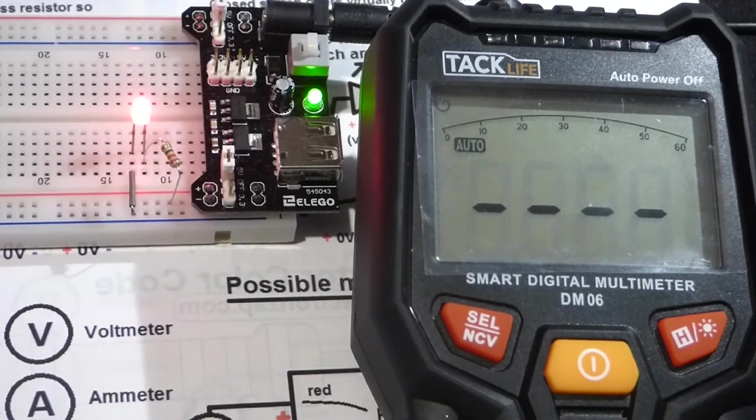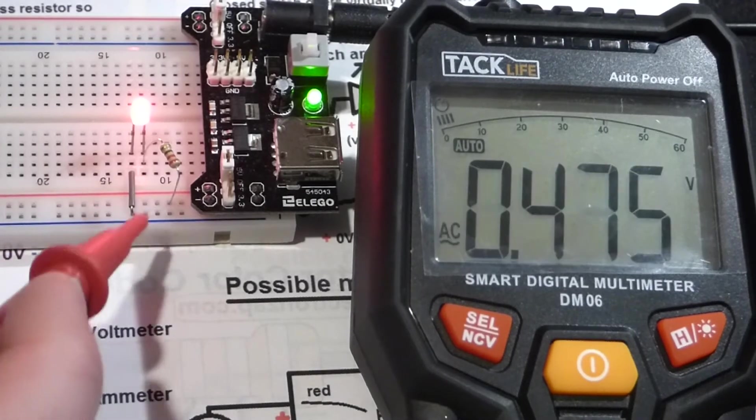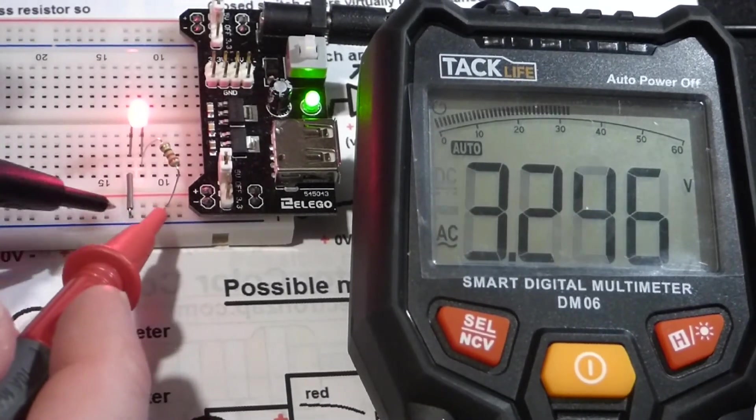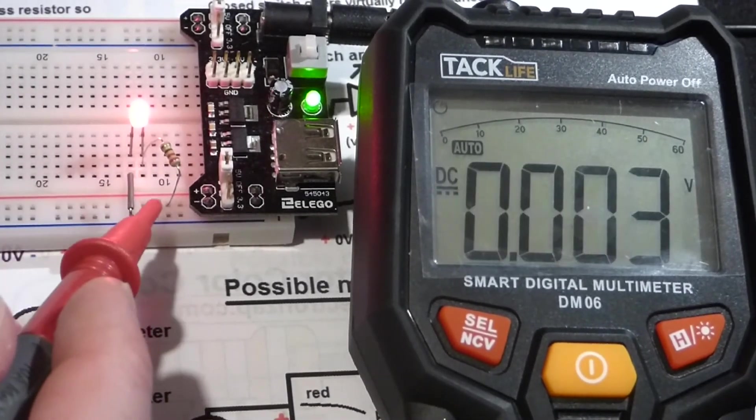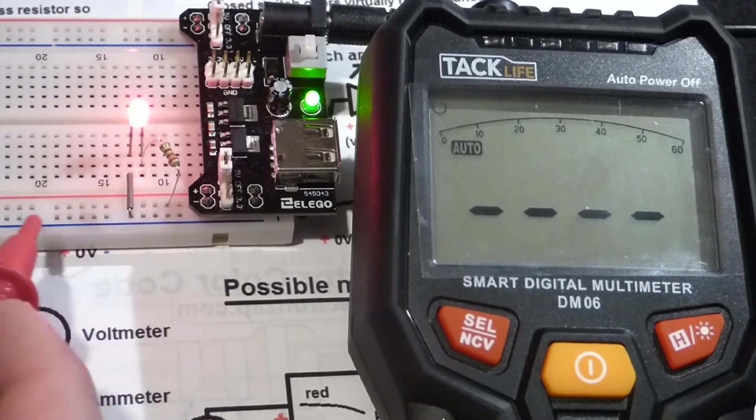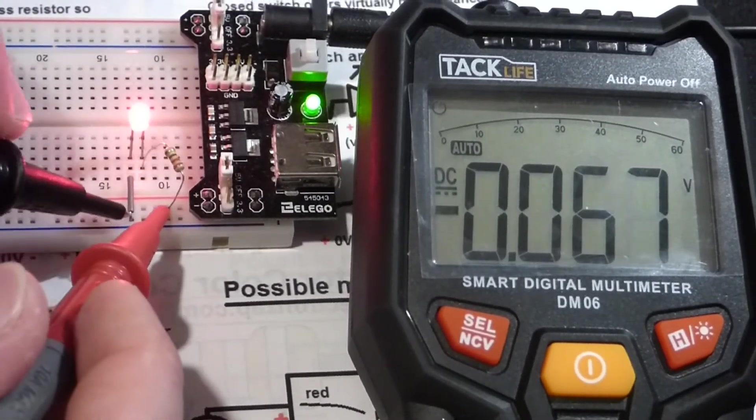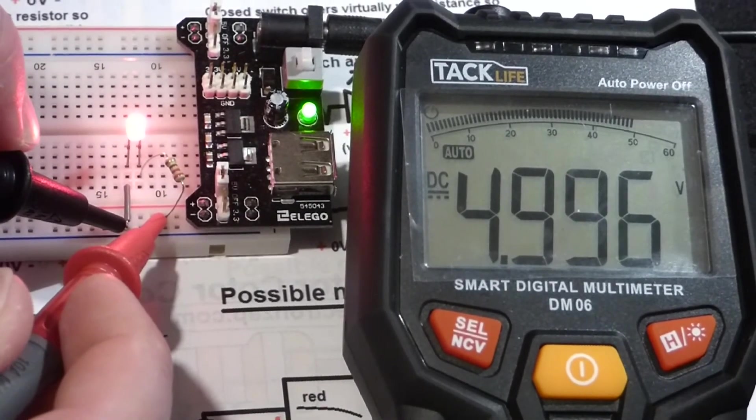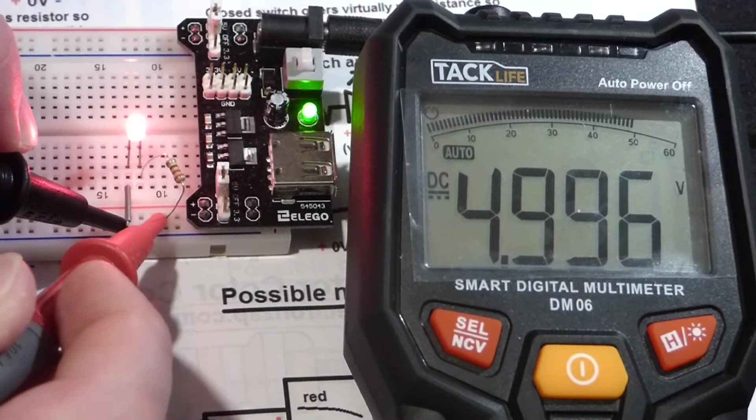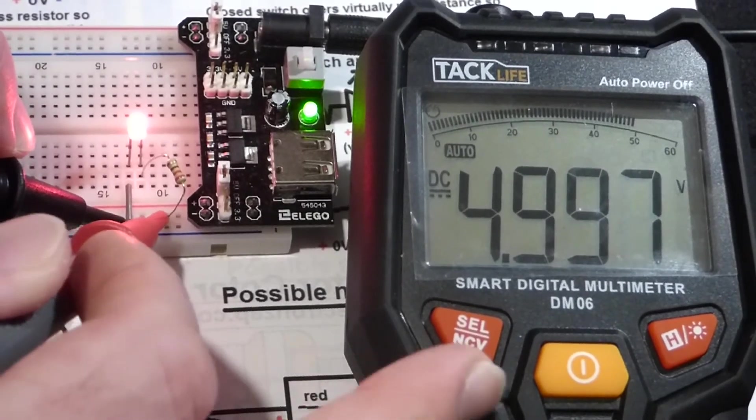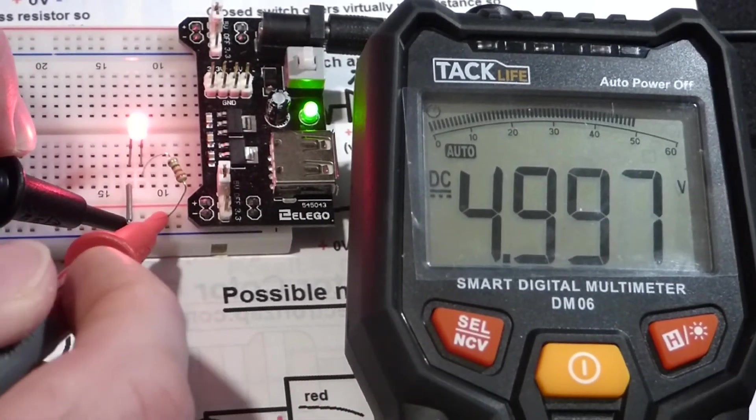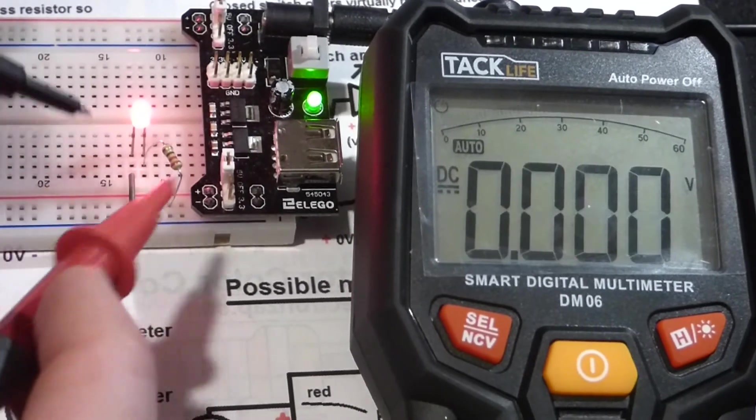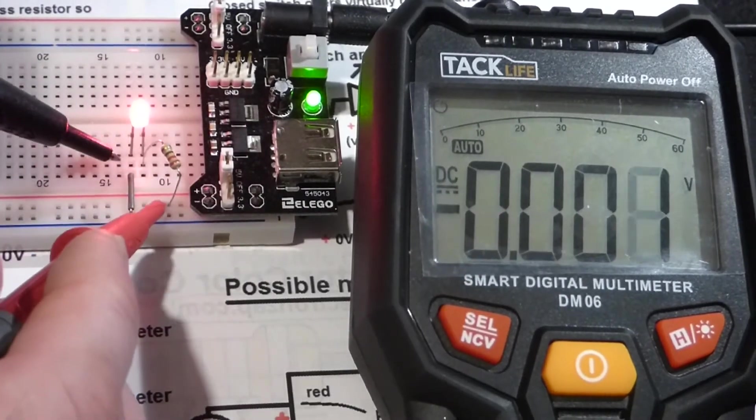So now the power supply is on. We're going to attach the probes to the two points of the circuit that attach to the breadboard rails that go to the power supply. Here you can see it's 4.996 volts. I haven't changed any settings on the meter here. It just automatically took voltage now. It recognized that there was a voltage and took a voltage.